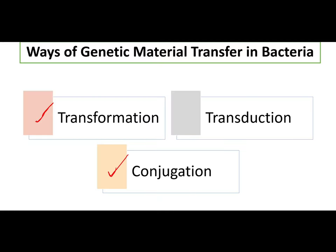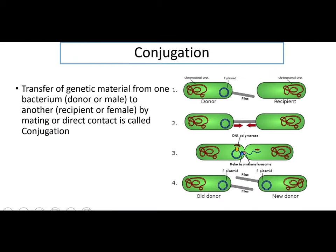Today we will cover conjugation, which basically employs or utilizes the feature of plasmid — plasmid ko use karke genetic recombination hoti hai. In conjugation, there is transfer of genetic material from one bacterium to another by mating or direct contact. Differentiating from the first method, here DNA is not naked; instead two bacteria come in direct contact with each other.